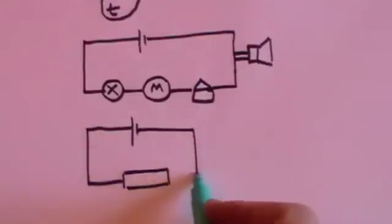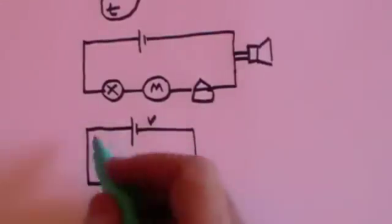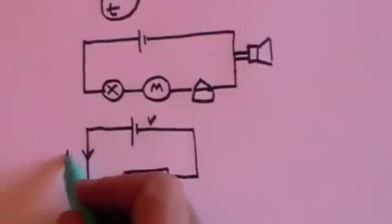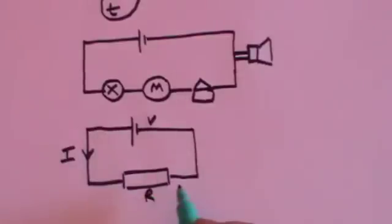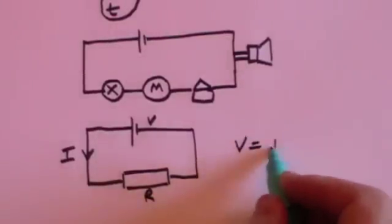Ohm's law, we said that we've got a battery of voltage V, we've got a current I, we've got a resistor of value R, and we said Ohm's law says that V equals IR.